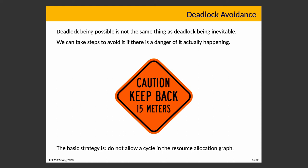The basic strategy is: do not allow a cycle in the resource allocation graph. That would prevent the fourth condition from ever being fulfilled, meaning a deadlock wouldn't happen. This is something we might have some control over — we can choose what resources are requested and in what order when writing a program. Some things needed for deadlock prevention were not in our hands, like preemption, which is the operating system's job.